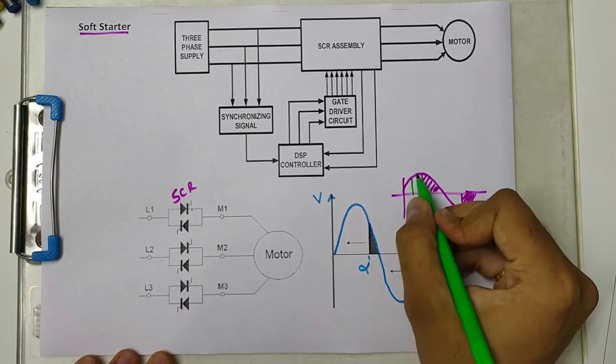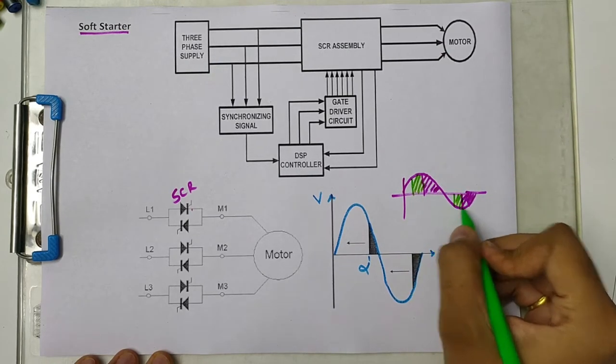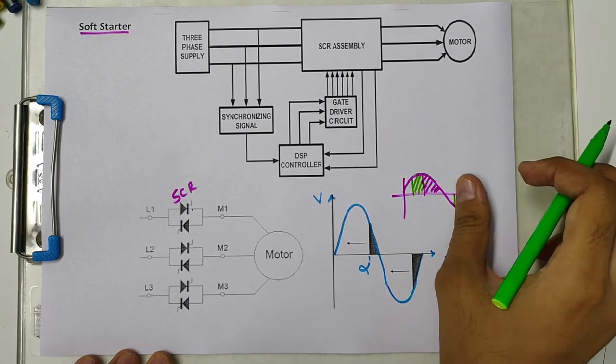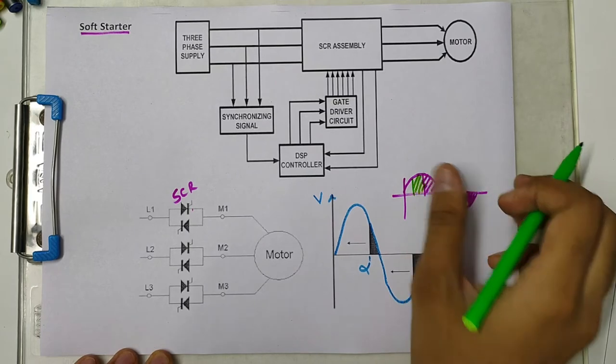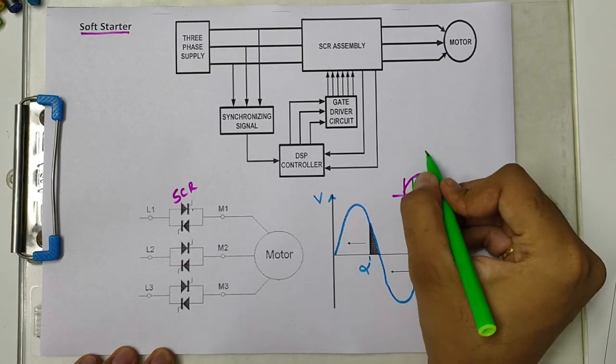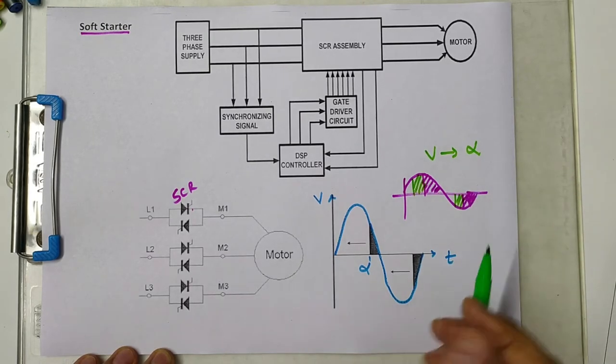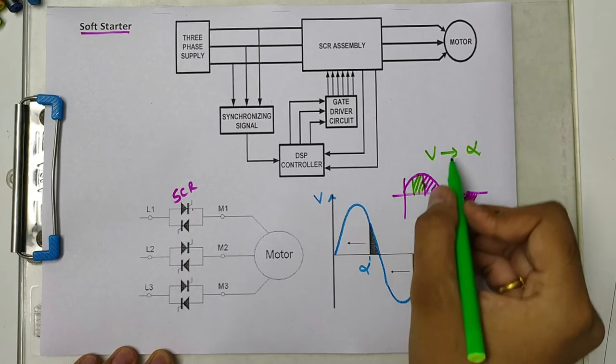If we further increase the value of alpha, the thyristor will stop conducting at an earlier point. The overall average value or RMS value of the voltage supplied to the motor depends on alpha. As we increase or decrease the firing angle, the voltage value will also change accordingly.